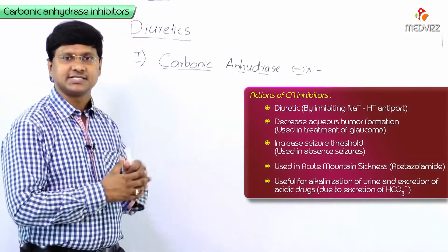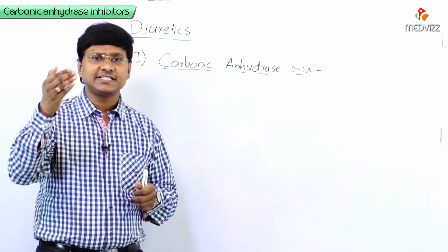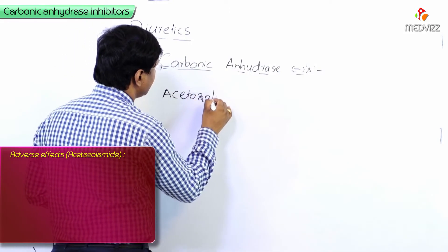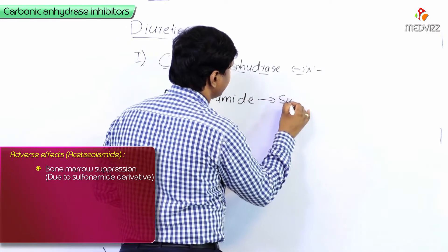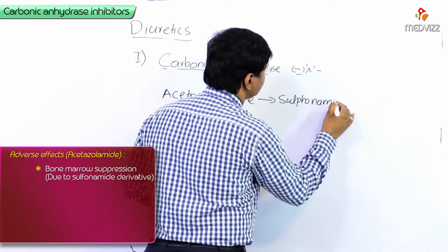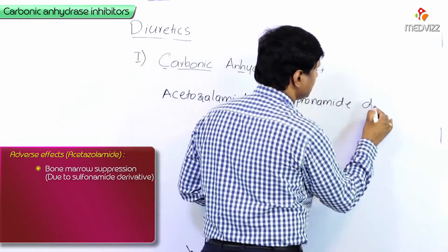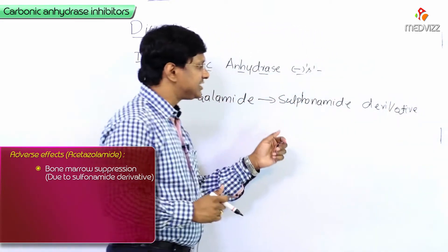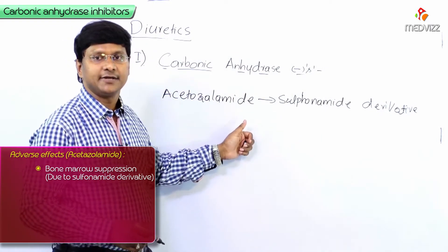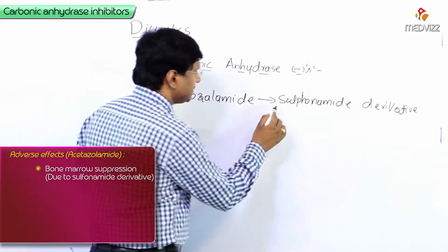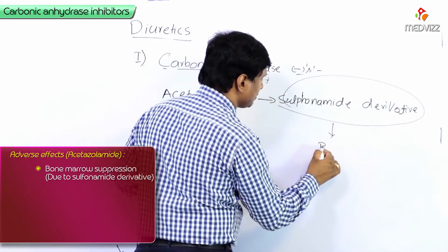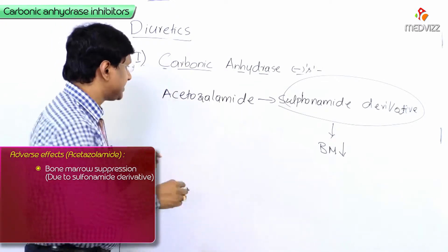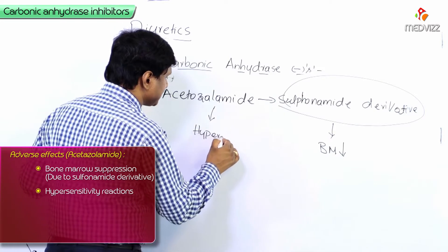We have discussed the various uses of acetazolamide, but remember there are certain adverse effects associated with it. Acetazolamide is a sulfonamide derivative, and because of this, it will cause bone marrow suppression. It is also associated with hypersensitivity reactions.